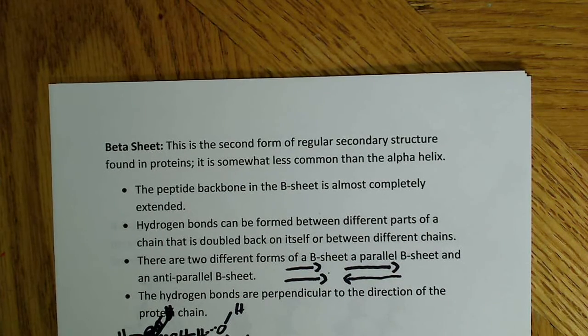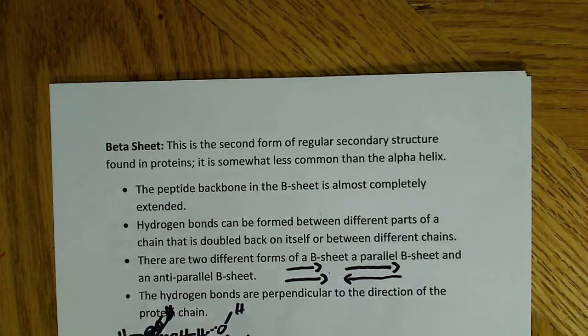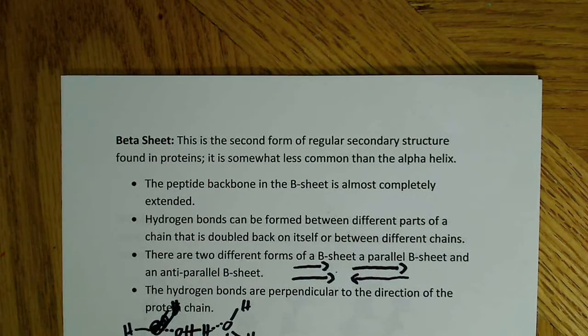The first thing I want to say is that the beta sheet is the second form of regular secondary structure found in proteins. It is somewhat less common than the alpha helix, but it's still quite common.